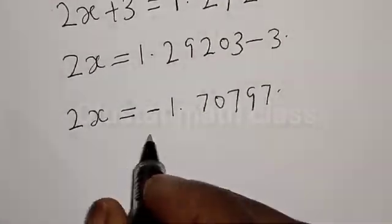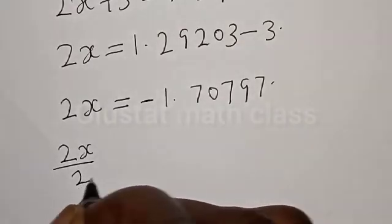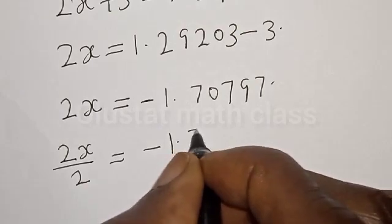Now let's divide both sides by 2. We have 2s divided by 2 is equal to minus 1.70797.